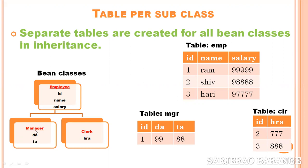When storing a Manager record, the values are: id, name, salary, and data. The superclass property values — id, name, and salary — go into the EMP (superclass) table, while the subclass property value 'data' goes into the MGR (subclass) table. Along with that, the primary key value from the superclass record is inserted as the foreign key value in the MGR table. So if the Manager record has id=1, then id=1 appears in both EMP and MGR tables, meaning that EMP record with id=1 belongs to Manager.